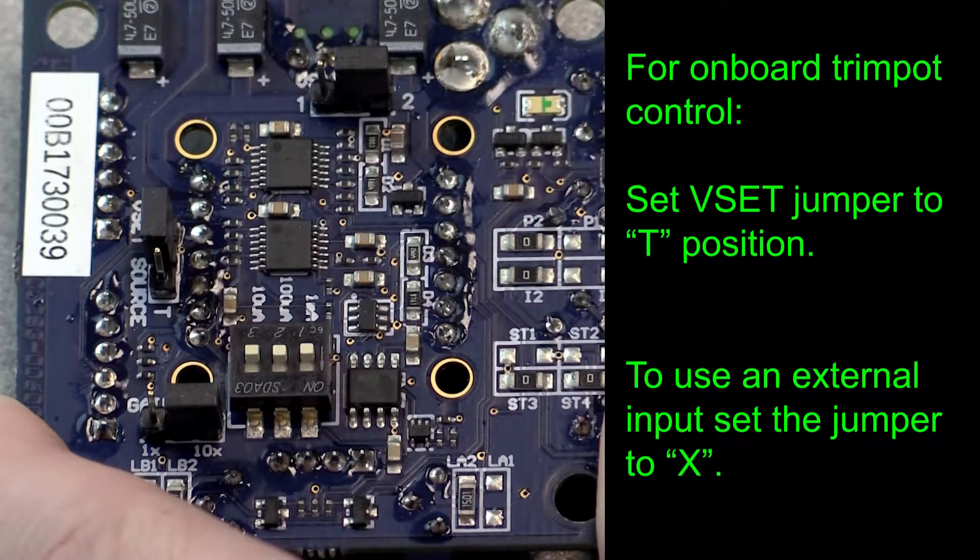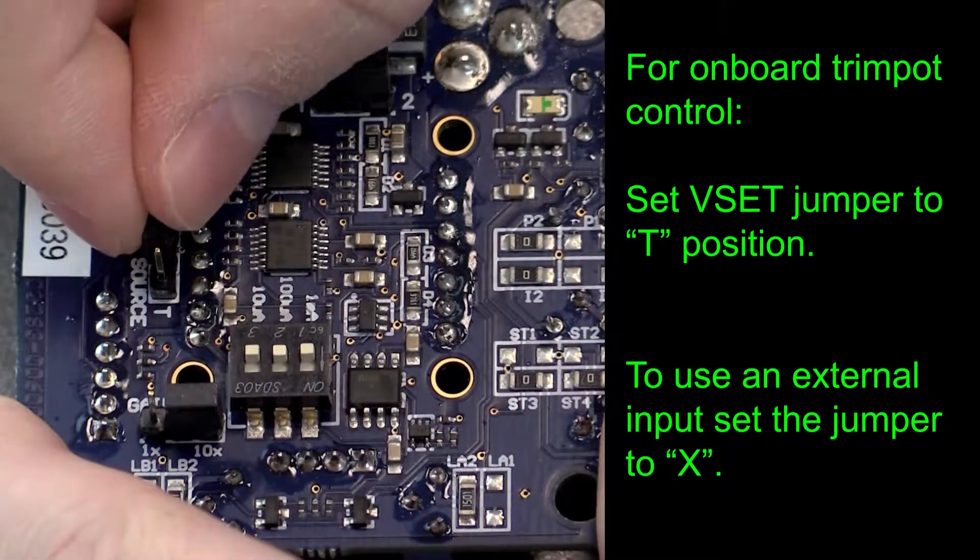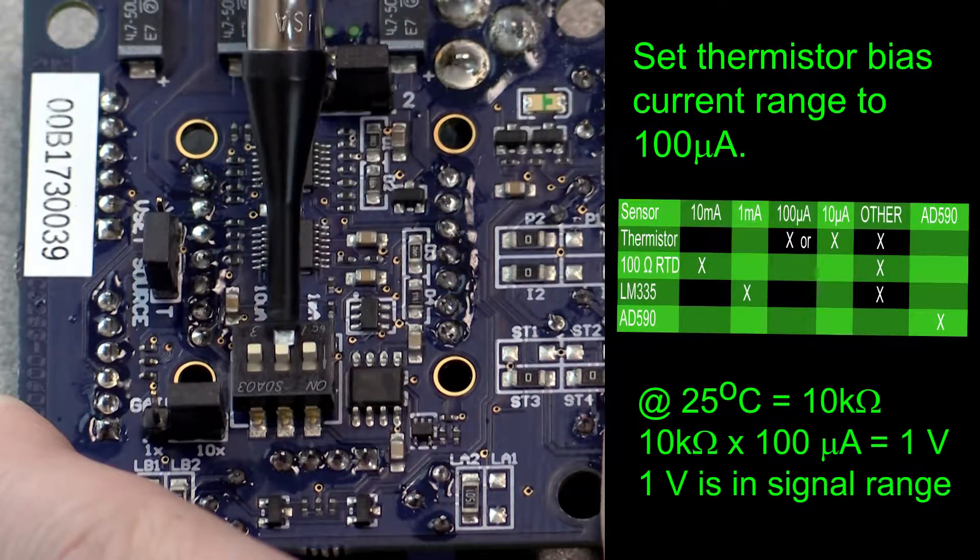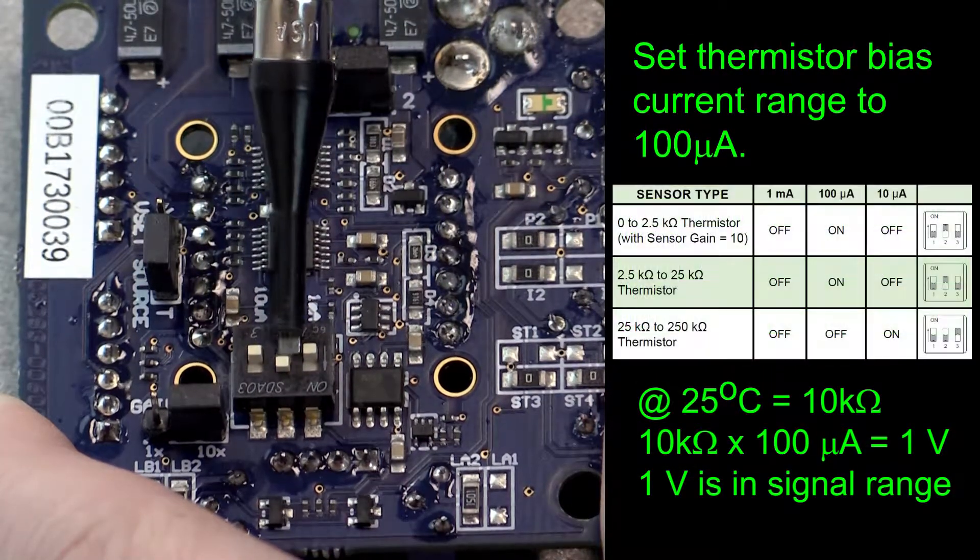To use the onboard trim pot for the set point, the VSET jumper must be in the T position. Set the sensor type to thermistor with 100 microamps bias current.